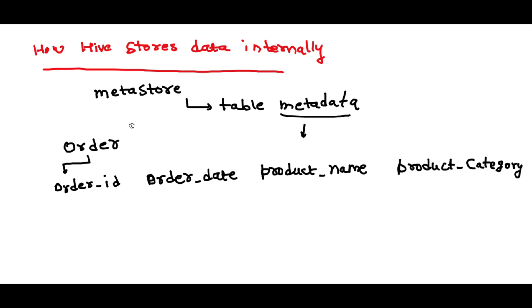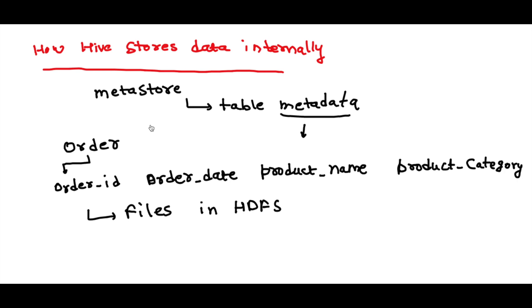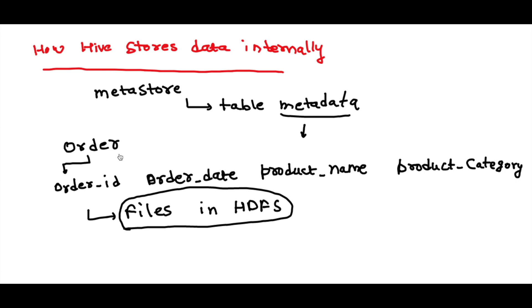All this information about the metadata — the order table and its different columns — is maintained in the metastore. But where is the actual data? Your actual data is stored in the form of files in HDFS. Hive is essentially just a reference to HDFS files, and the mapping of the files to table names is maintained in your metastore. So the metastore contains two important things: the table information, and the location of files in HDFS.